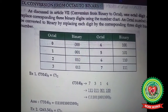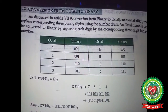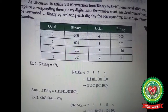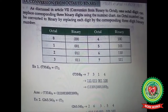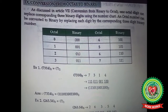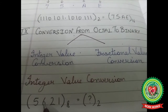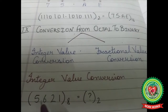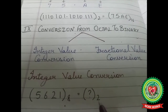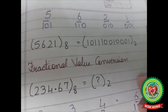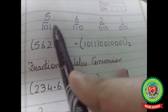Let's start with conversion from octal to binary. Open your book at page number 28. An octal number can be converted to binary by replacing each digit by the corresponding three-digit binary number. Let's do this with an example — we are going to convert 5621 (an octal number) to binary.